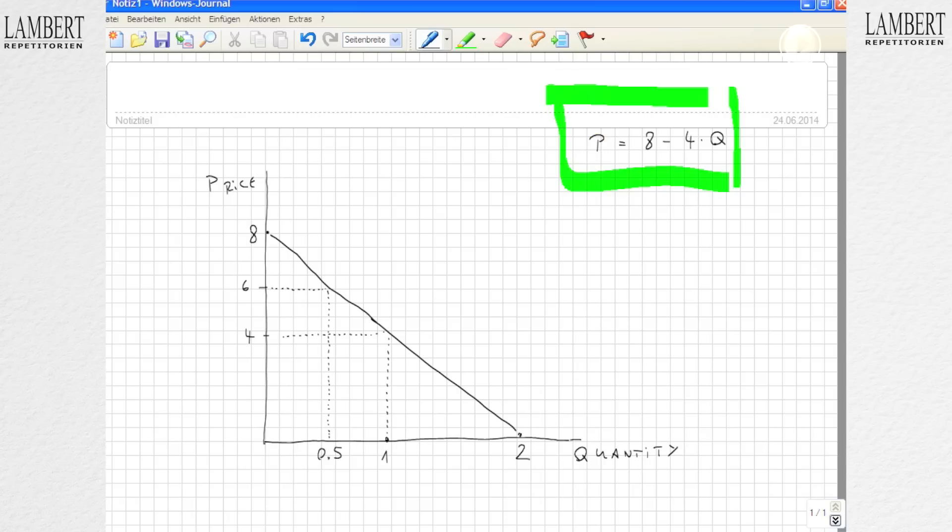If you solve for the quantity demanded, you get the quantity. So a price of 4 equals a quantity demanded of 1, whereas a price of 6 leads to a quantity demanded of 0.5, and so on. That's the concept of the demand function.